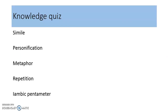We're going to make a start straight away with a knowledge quiz this week to make sure that you have understanding of these key words. Write these five words down on a piece of paper, then write a definition of what each of them means and, if you can, an example of each of them. So you've got simile, personification, metaphor, repetition, and iambic pentameter. Give yourself five minutes and do that task now.